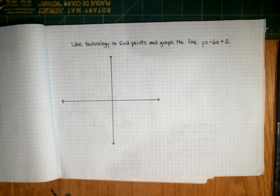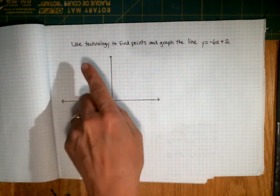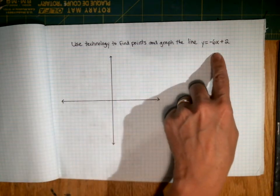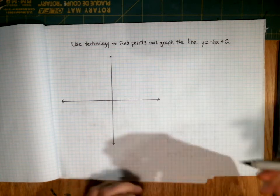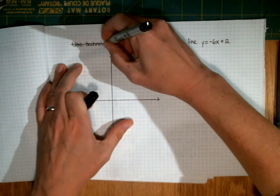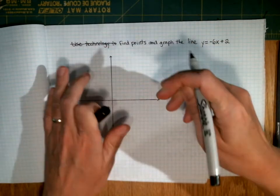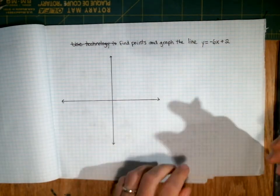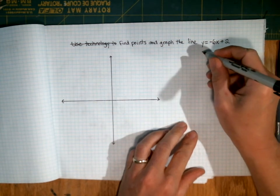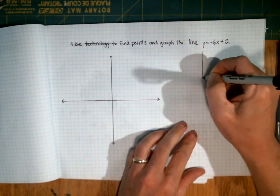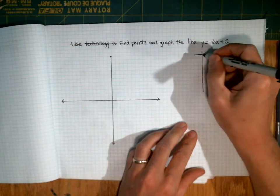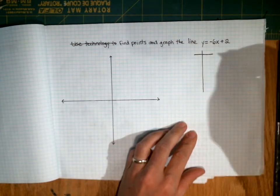In their instructions, they say use technology to find points and graph the line, and then they give you an equation. I say you are not going to use technology. You are going to use a pencil and paper. This is a really important skill, and it's one that the algebra teachers at Hanover High requested specifically. It's a lot easier, honestly, than using technology.